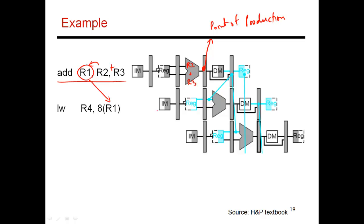Looking at the dependent instruction starting in the next cycle, it wants to do R1 plus 8 in the ALU stage. That is the point of consumption — where I need to know the value of R1. Since the point of consumption is after the point of production, these two instructions can actually issue in back-to-back cycles with zero stalls.